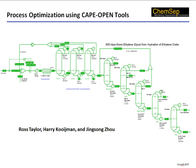Hello, my name is Ross Taylor. Harry Koiman and I are the architects of the column simulation program ChemSat. Shown above our names is a screen capture of a flowsheet for an ethylene glycol plant created in COCO by Harry. I will be using this flowsheet as the vehicle to demonstrate some of the new features in ChemSat. Jing Song Zhou is a PhD candidate at Clarkson University, and some aspects of his work will be highlighted in the second half of this presentation.